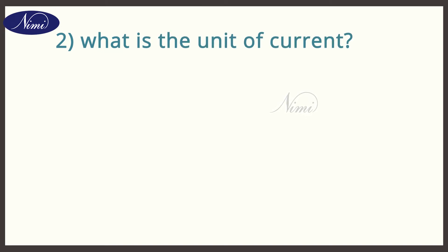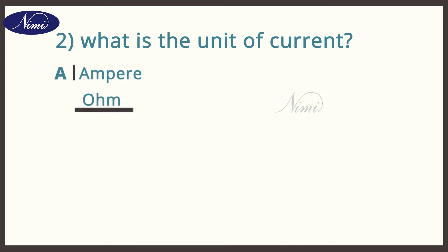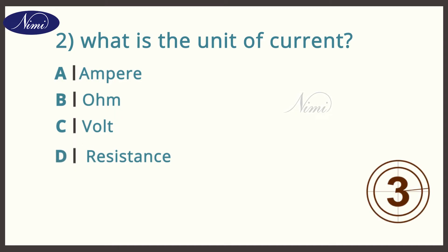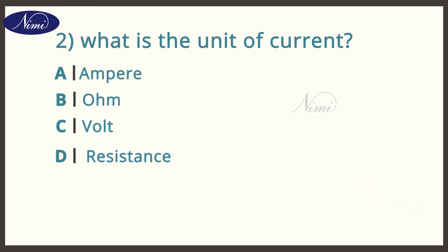Question number two: What is the unit of current? The options are A: Ampere. B: Ohm. C: Volt. D: Resistance. And the answer is A — Ampere.